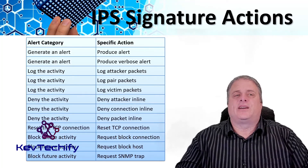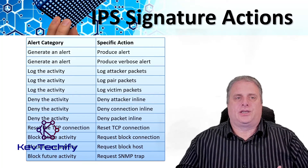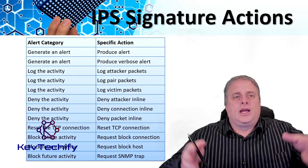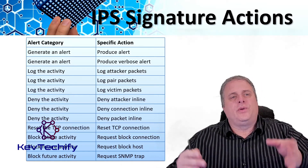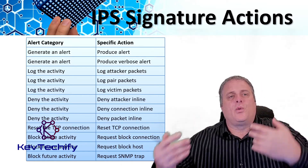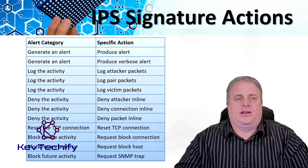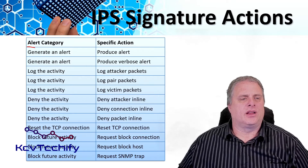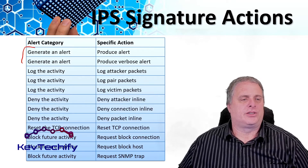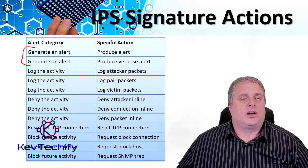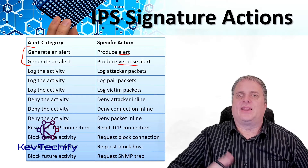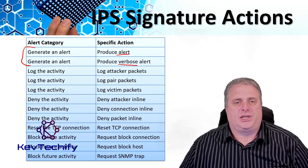There are several IPS signature actions. We can put them in a category and then specify what action is to be taken. The first is generate an alert. This alert can either be a normal alert or verbose, where verbose means we're going to send lots of detailed information.